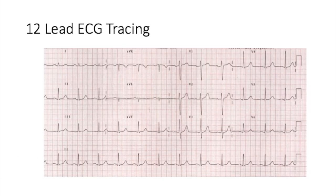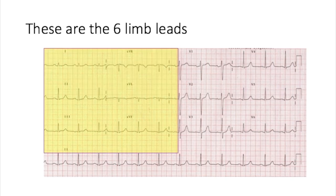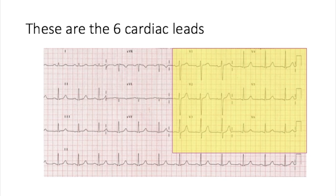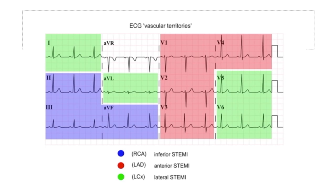This is typically what we get printed out in the hospital — this is called our 12-lead. You can see lead one, lead two, lead three with a short snapshot each, then augmented vector right, augmented vector left, and augmented vector foot — a quick snapshot of how the heart looks from each perspective. The six limb leads are highlighted here. The six cardiac leads, V1 through V6, are shown in the upper right of the page. This layout is also used to identify where a STEMI — ST elevated myocardial infarction — is occurring.